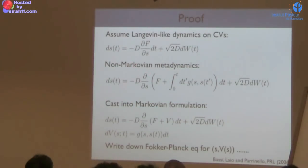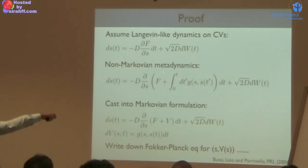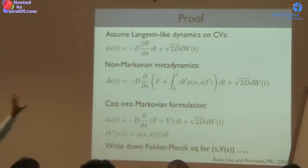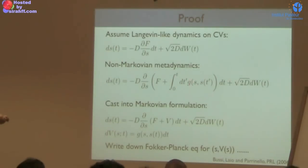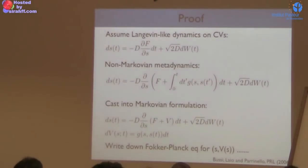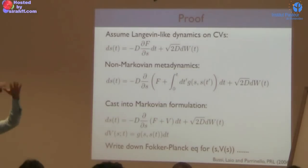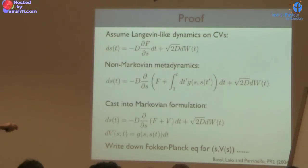This equation is non-Markovian — the dynamics depend on the history. To study the equilibrium distribution and fluctuations of the error, you must recast it in a Markovian way. It's possible to do so by realizing you can obtain the same dynamics from coupled Markovian equations. Instead of just s, you introduce another variable — a function representing the value of V at each point. Then you update the bias and position simultaneously: the MD code updates positions accounting for F plus V, and PLUMED updates the bias by adding Gaussians centered at the current position.